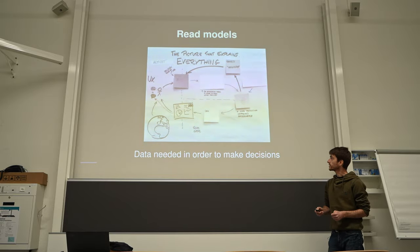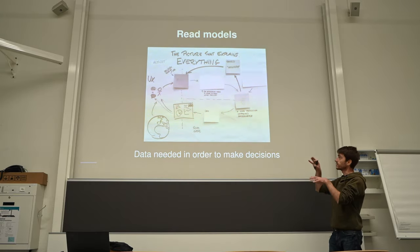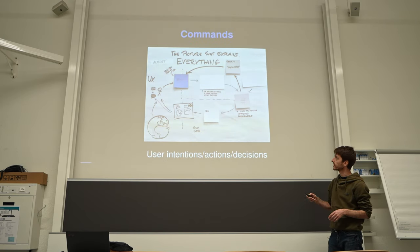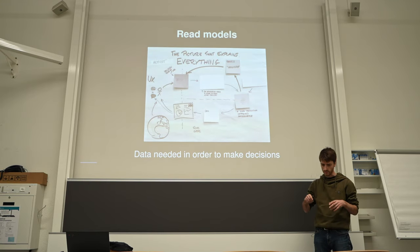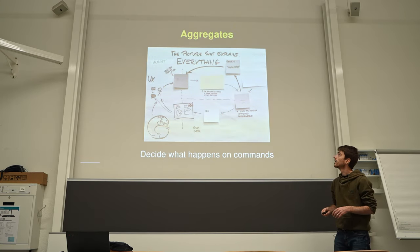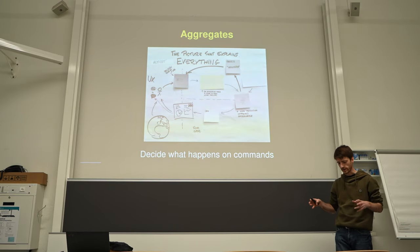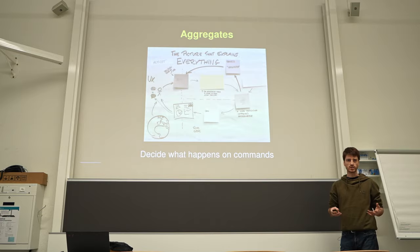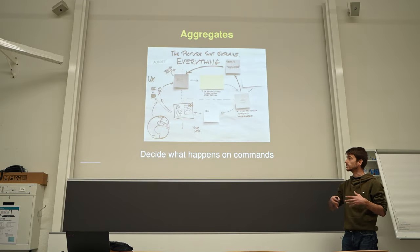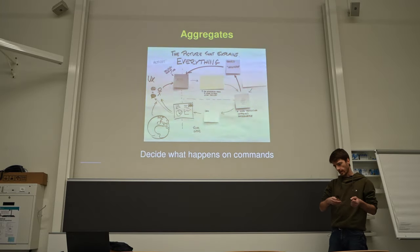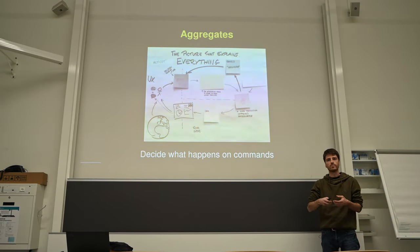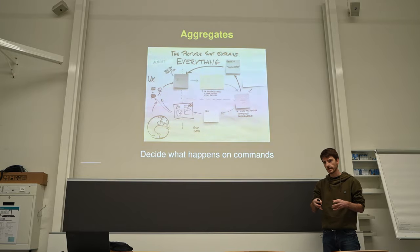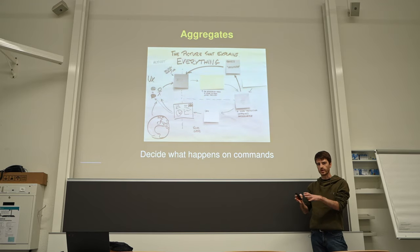There are three other pieces which are more process-like. The first one are aggregates — it's basically that piece of logic in your application which decides how to deal with commands coming from the user and decides how to alter the state of your system. It really is the core logic of your application. It will decide: the user is requesting to do this thing — can I do it or not? And if I can, what will really happen inside the application?